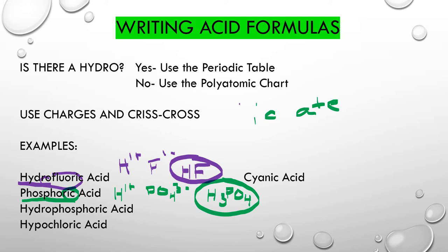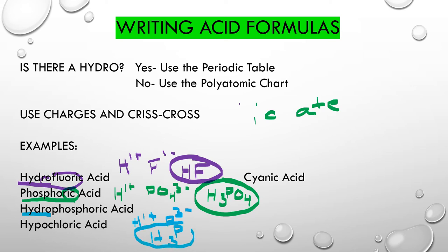Let's look at hydrophosphoric acid compared to phosphoric acid. Hydro — once again — tells us that we have no O and we are using the periodic table. So we have H, and since it's phosphoric, we know it came from phosphorus, which is just an element on the periodic table. Crisscross and we get H3P. Pay attention to the difference: hydrophosphoric acid uses the periodic table, so H3P; phosphoric acid uses the polyatomic, so H3PO4.